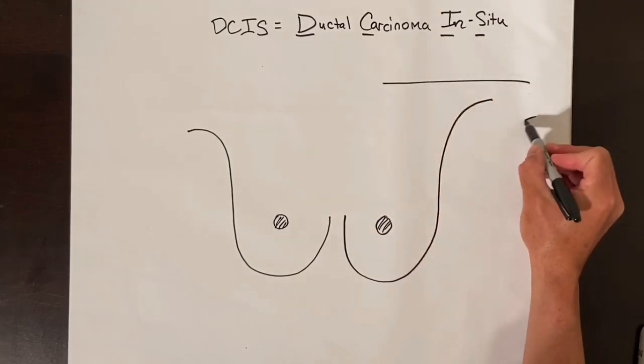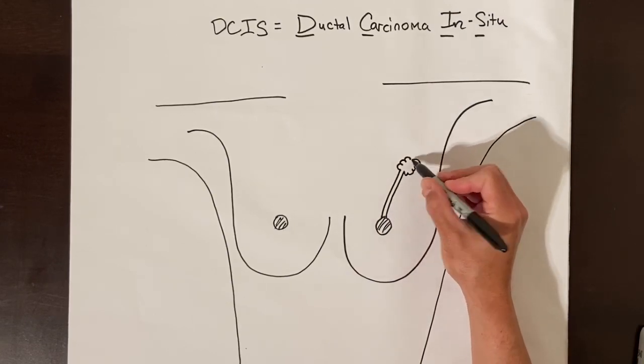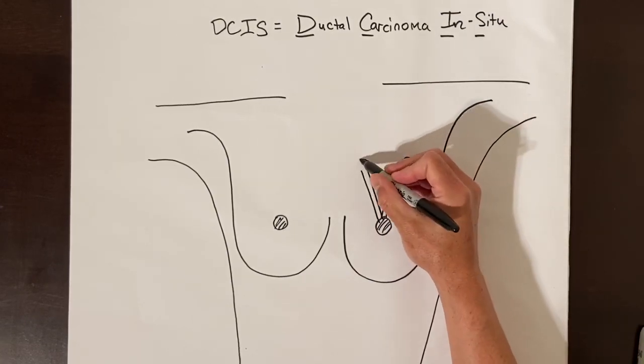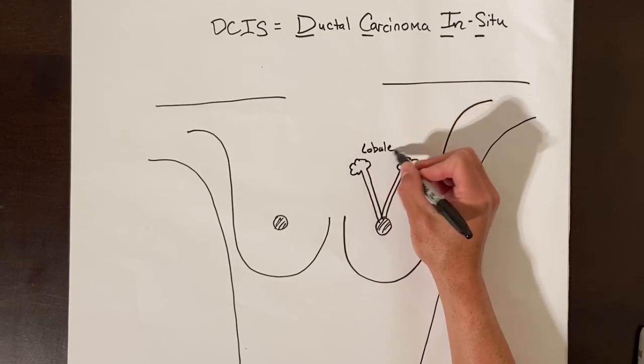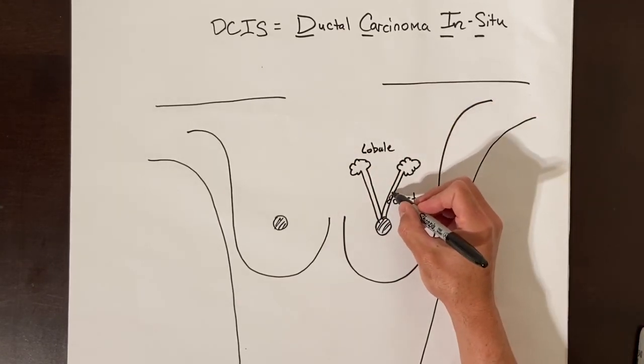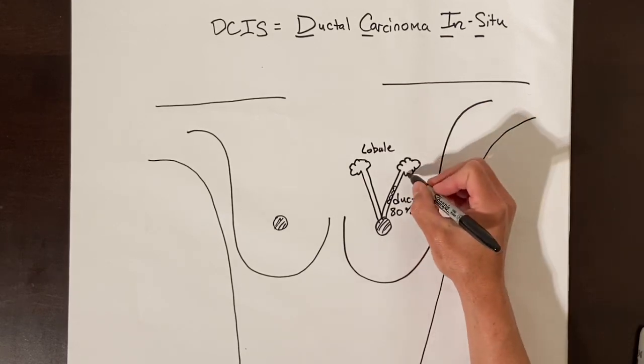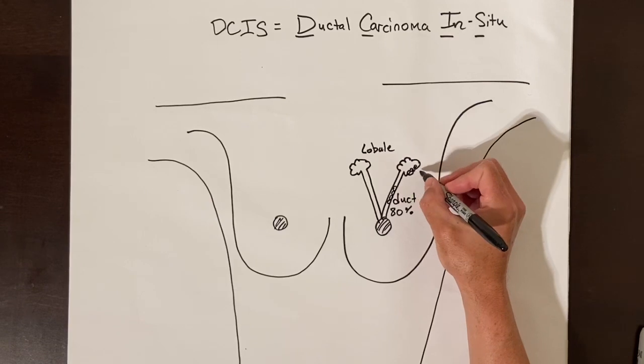DCIS stands for ductal carcinoma in situ. The breast is designed to deliver milk to the nipple during pregnancy. The milk is produced in a part of the breast called the lobule and travels to the nipple through tubes called ducts. There are thousands of these duct units throughout the breast. About 80% of breast cancers come from the duct cell, whereas only 20% come from the lobule cell.